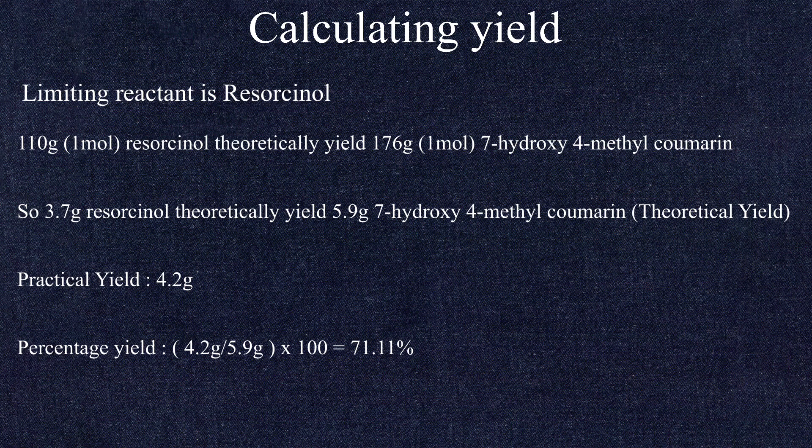The practical yield that we got was 4.2 grams. So the percentage yield is the practical yield divided by the theoretical yield times 100. So 4.2 divided by 5.9 times 100, that is 71.11%.